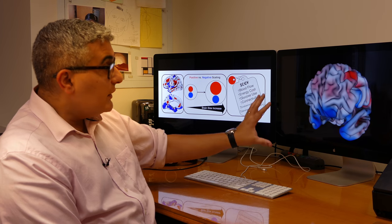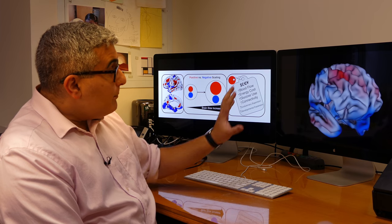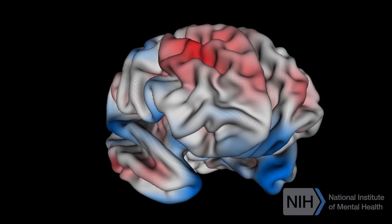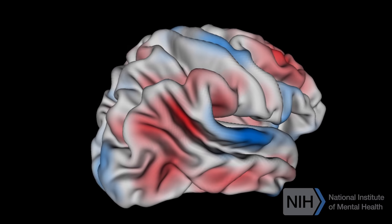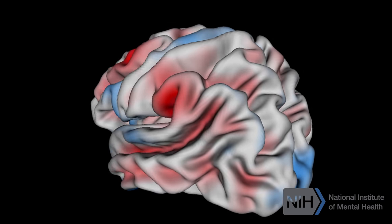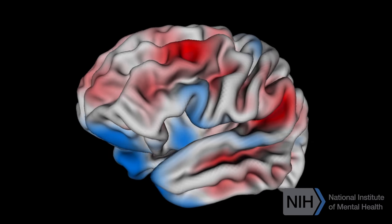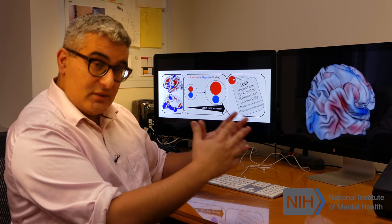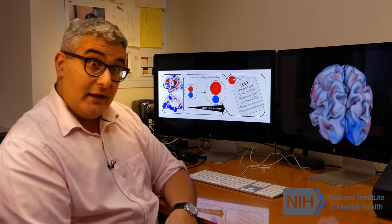So what you're seeing here is a spinning human brain with a map that answers that question. And where you see red, those regions expand prominently as a function of brain size. In contrast, where you see blue, these regions expand, but not as much as the red regions. They become more expanded than the blue regions in larger brain individuals.